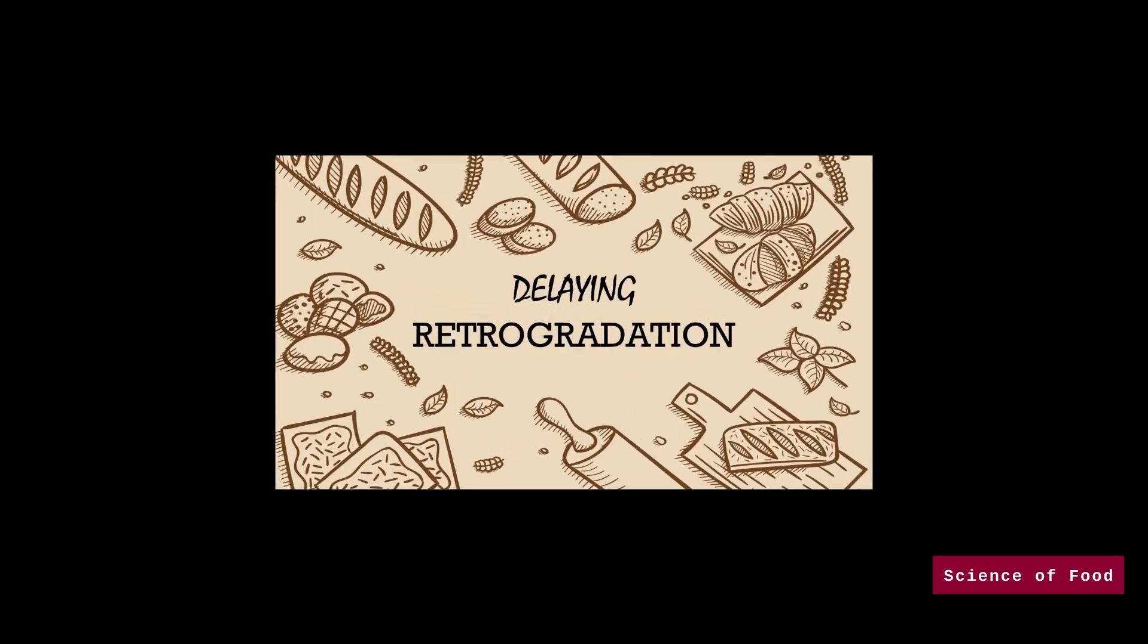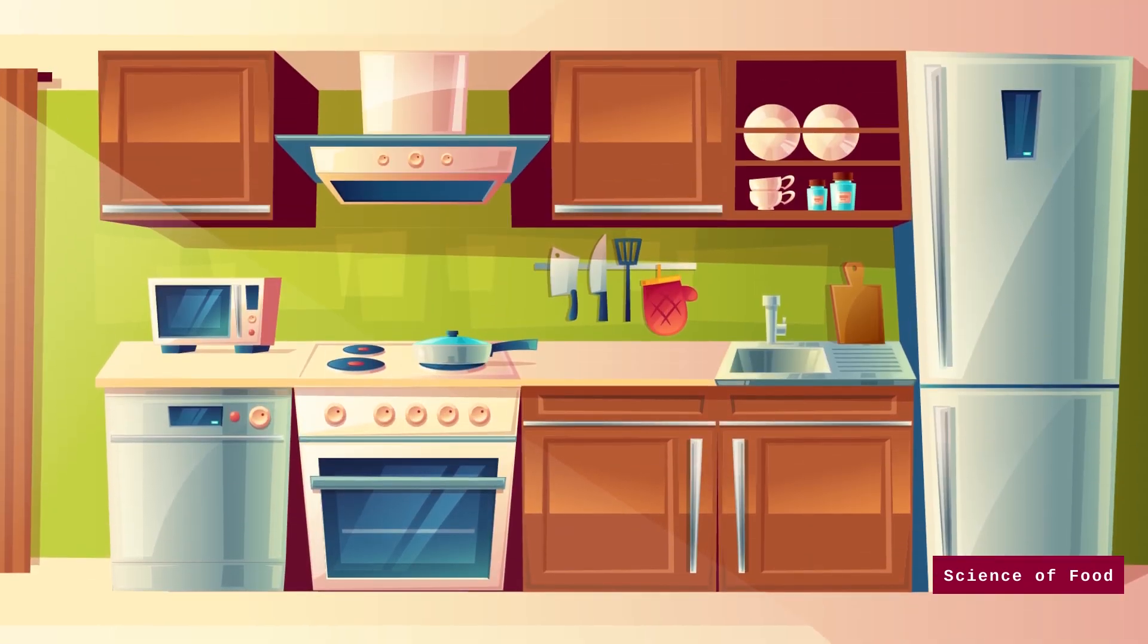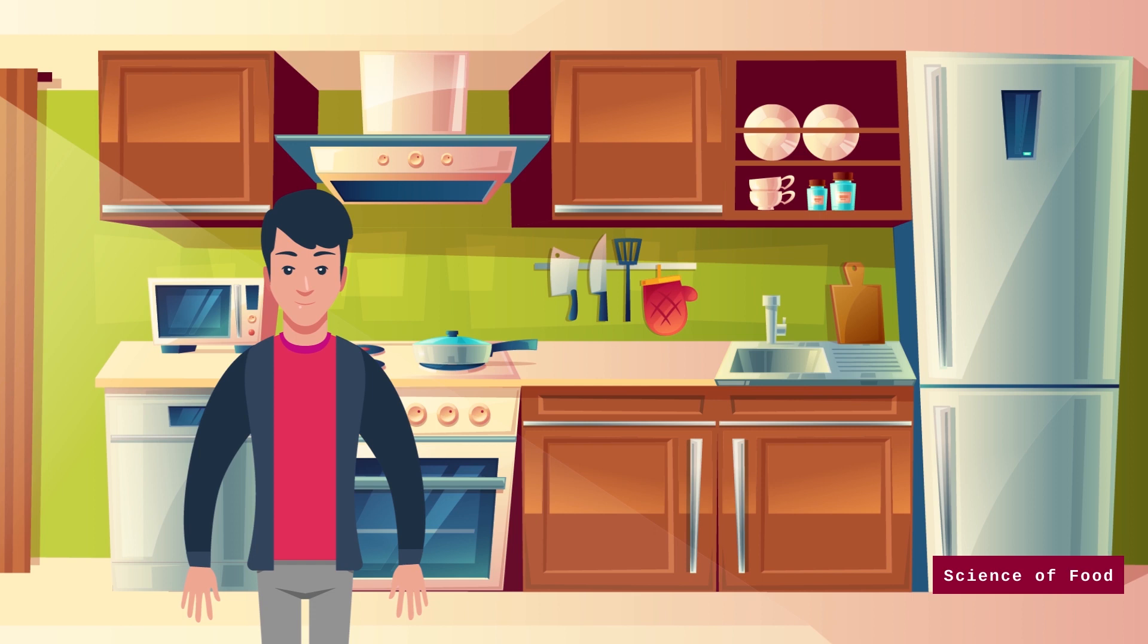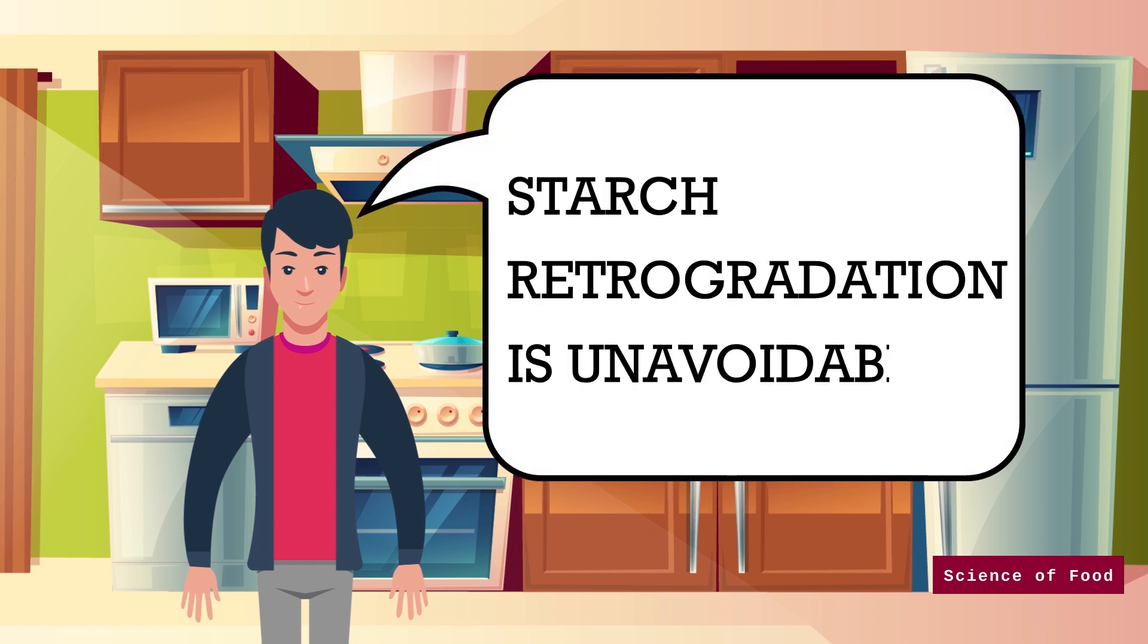How can we control retrogradation? There are a few things that we can do to have soft bread for a longer time. Take note that we can't eliminate retrogradation, but we can slow it down.